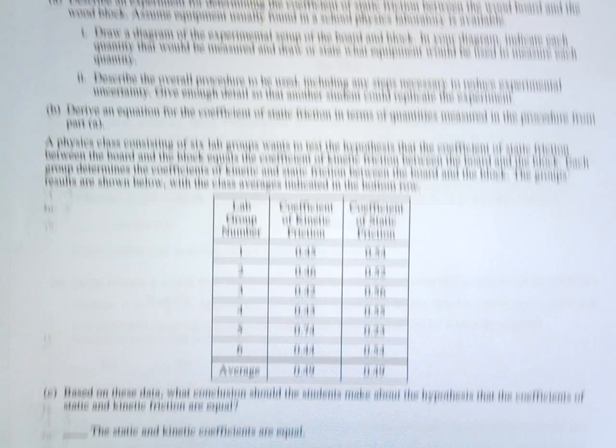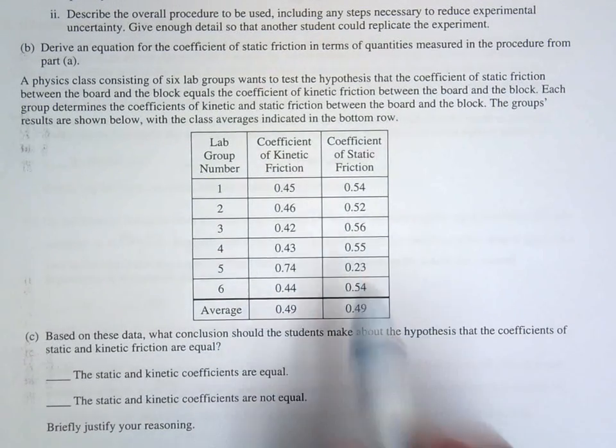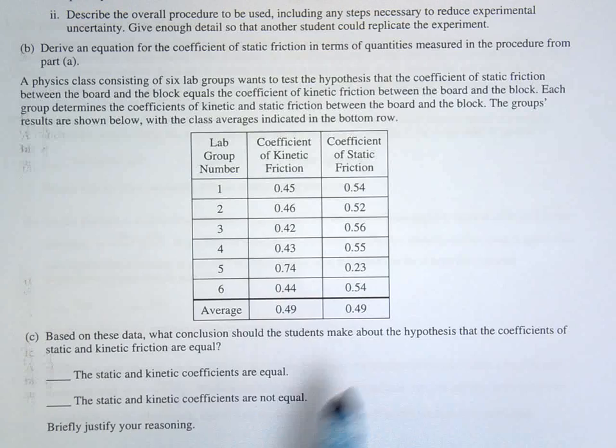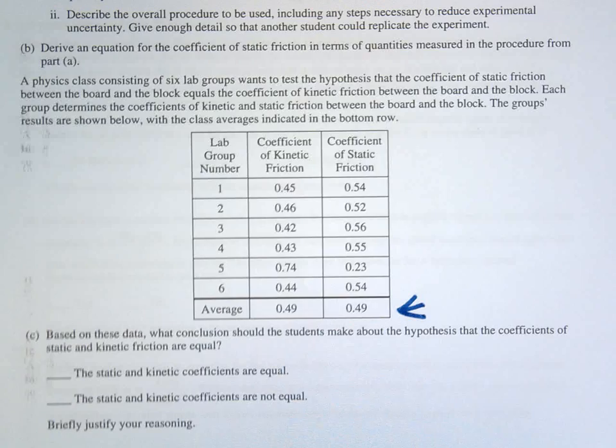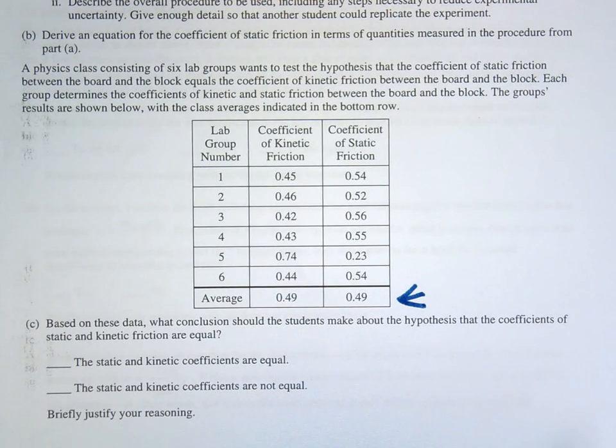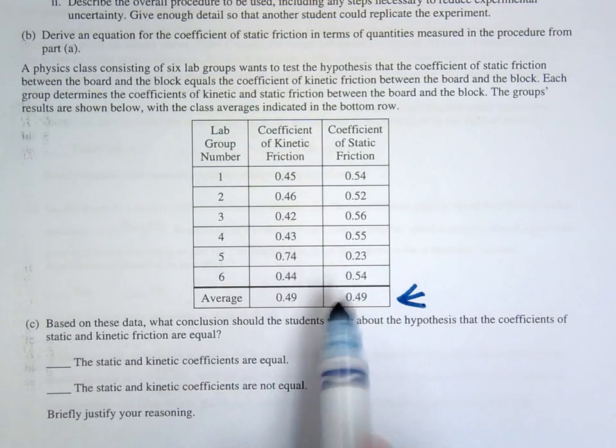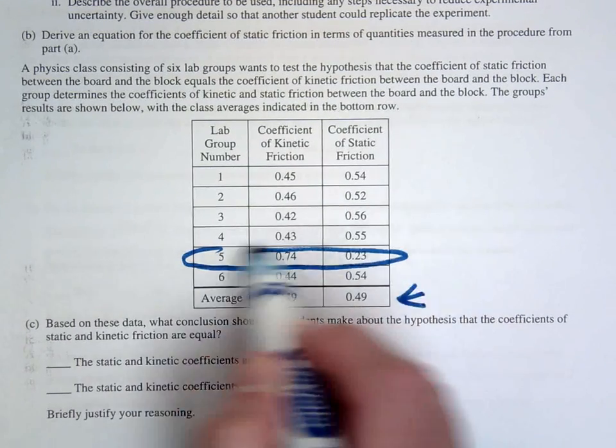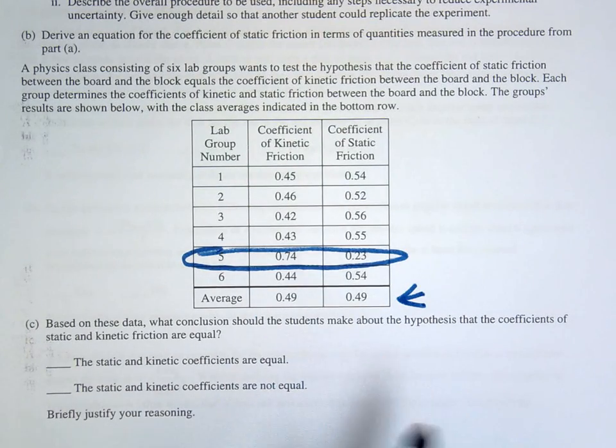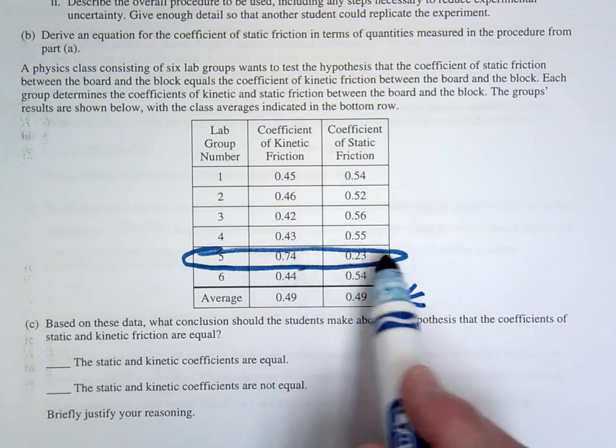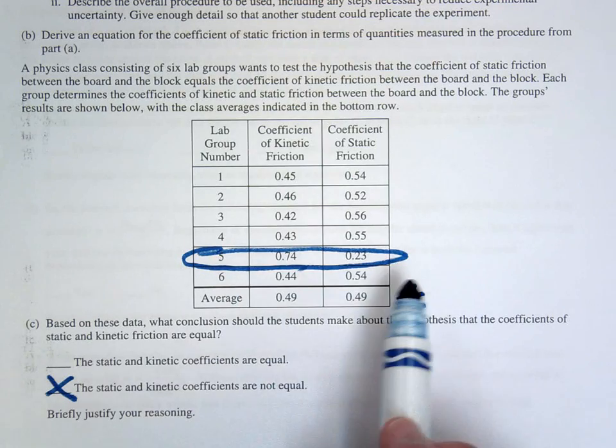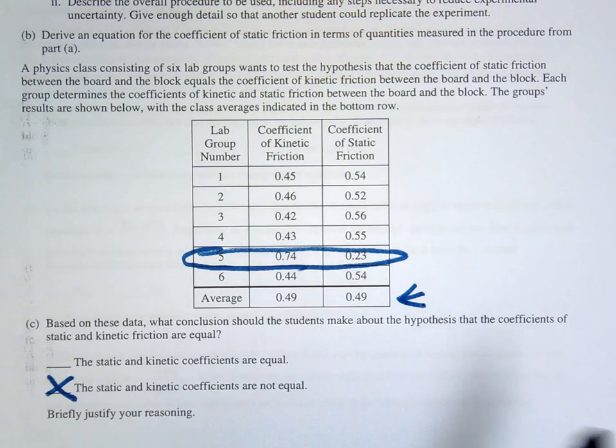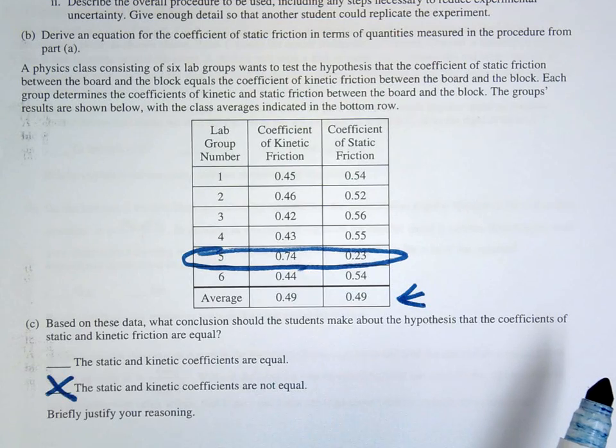Actually this isn't the last one but second to last. They give you all this data and basically want to say what's the conclusion. So you look at the average and you see they're equal. First blush you might think they are in fact equal. However, if you notice five out of the six trials, it says that the coefficient of kinetic friction is less. And it's only this one weird outlier here where it's a huge difference in the opposite direction. So I think you can clearly say that they are not equal. And you would just talk about the fact that something went wrong with group five, and all the other five groups seem to confirm that kinetic is less than static.